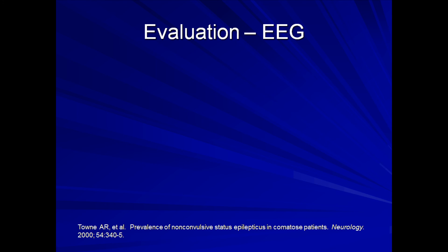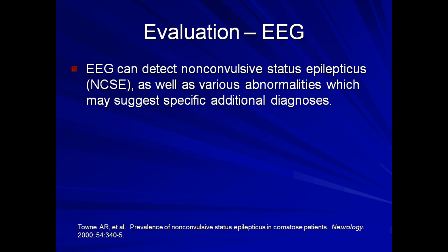The one major etiology of coma that an EEG can diagnose is non-convulsive status epilepticus, although it can also provide supporting evidence for a small collection of other diagnoses, such as periodic epileptiform discharges over the temporal lobes seen in herpes encephalitis. Non-convulsive status is one of those diagnoses that internists get more excited about than neurologists. Every time I call a neurologist to request an EEG for possible non-convulsive status, I receive a telepathic groan followed by a polite explanation that non-convulsive status is very rare and EEGs are rarely helpful in the evaluation of coma of unknown cause.